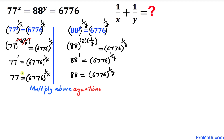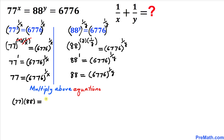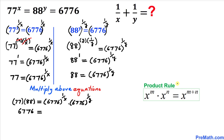Our next step is to multiply these two equations together — both the left-hand sides and the right-hand sides. So we write 77 × 88 = 6776^(1/x) × 6776^(1/y). Multiplying the left side gives us 6776.